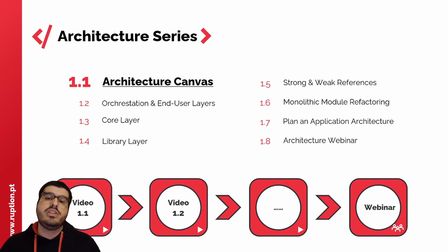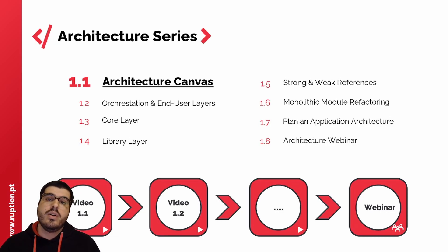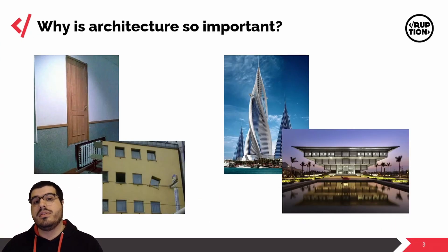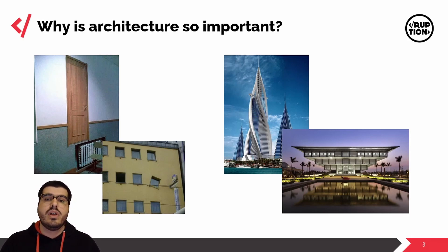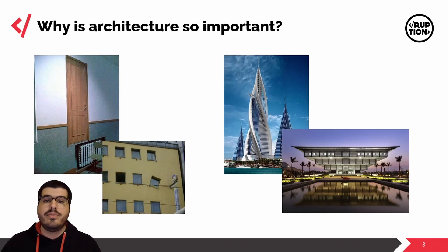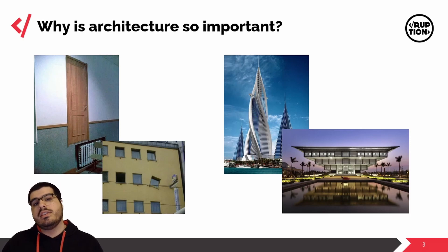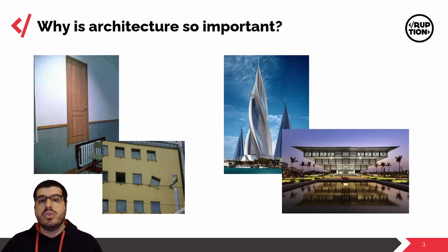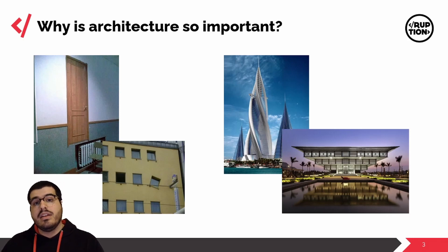Whenever I discuss or teach about OutSystems Architecture, I always like to start with a very simple question: why is architecture so important? I usually like to give real-life examples on good and bad architecture practices. On this slide, on your left, you will see that things weren't really planned, so you get a door that is not on the floor level or a window that is crooked. On the right side, you will see two amazing buildings because everything was planned since the beginning, and hence you get these amazing results at the end.